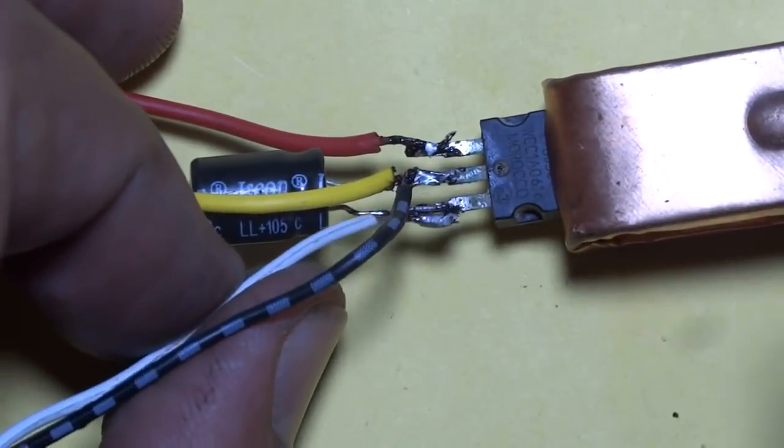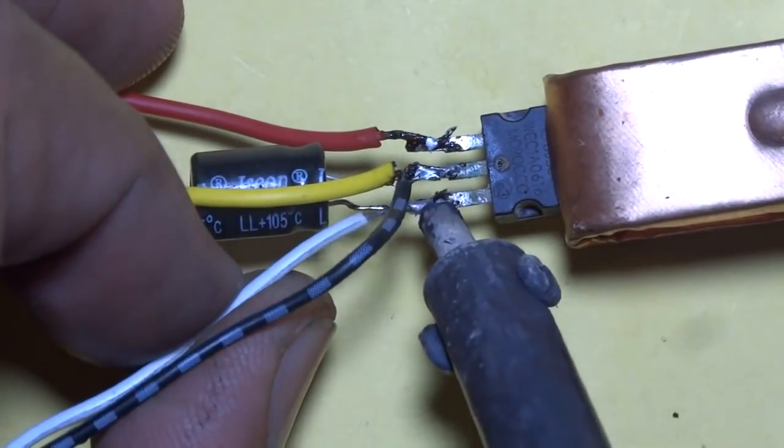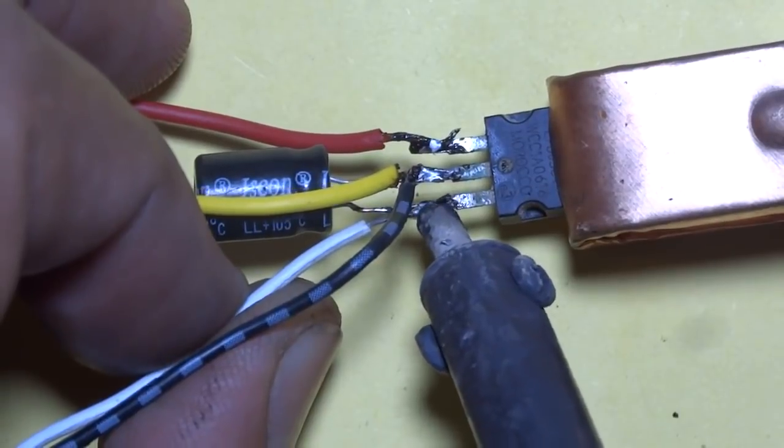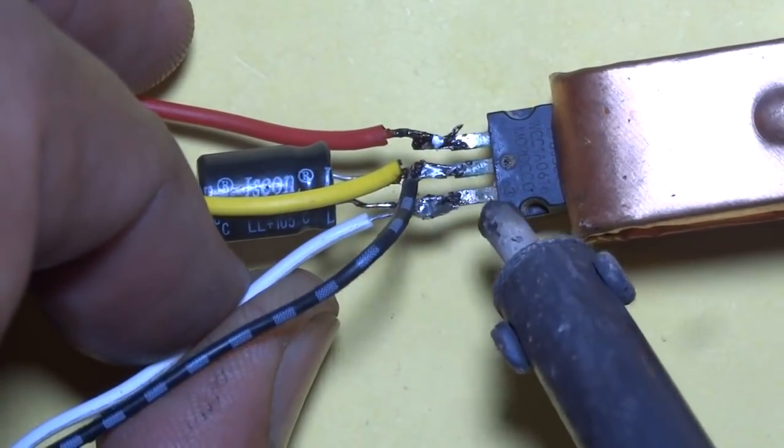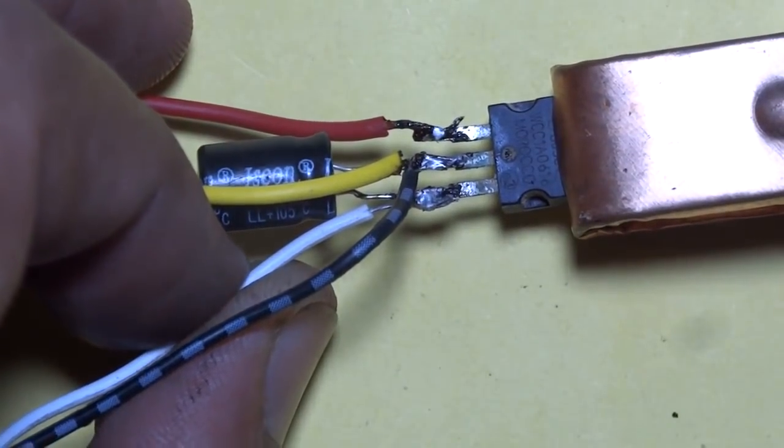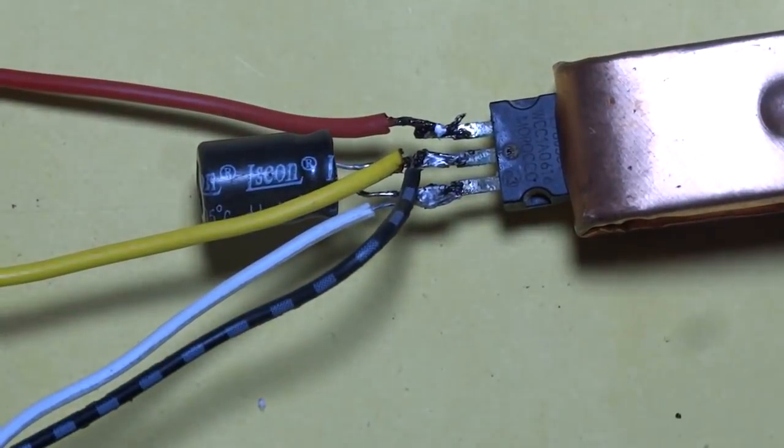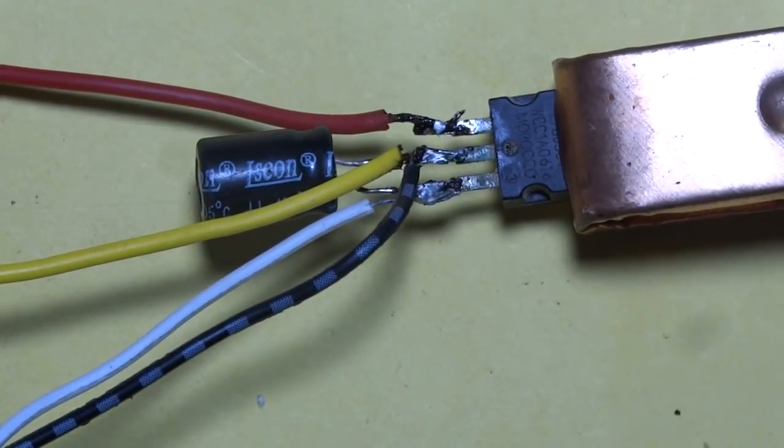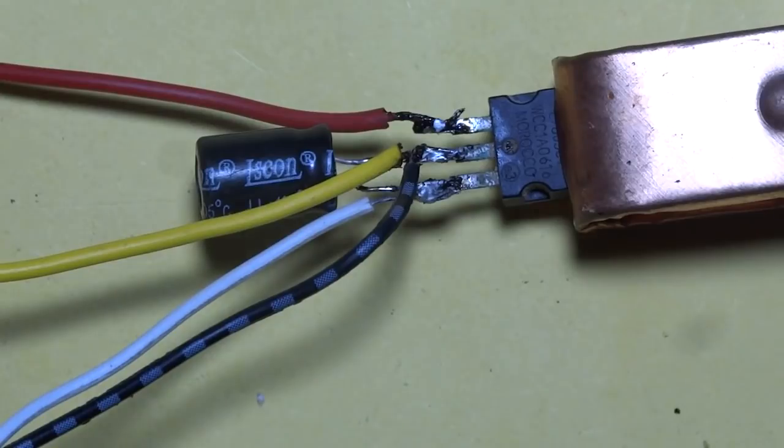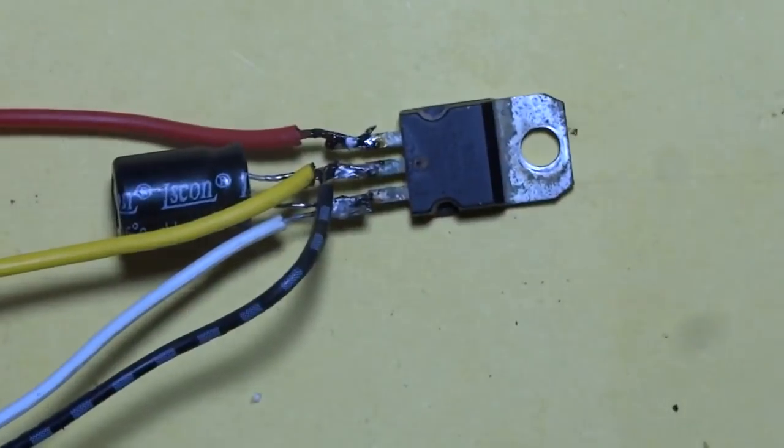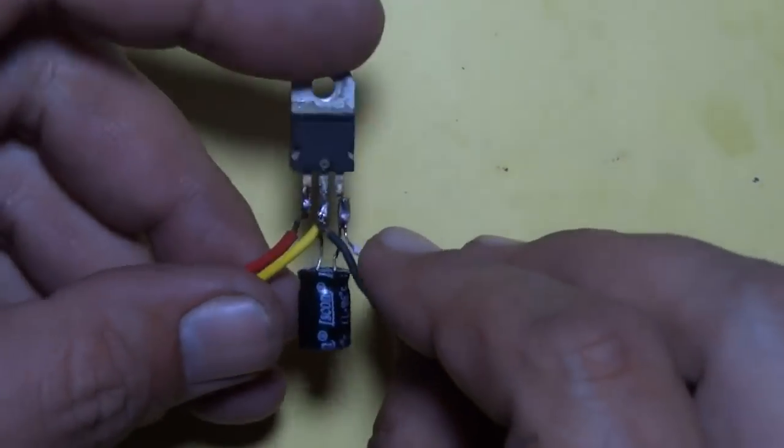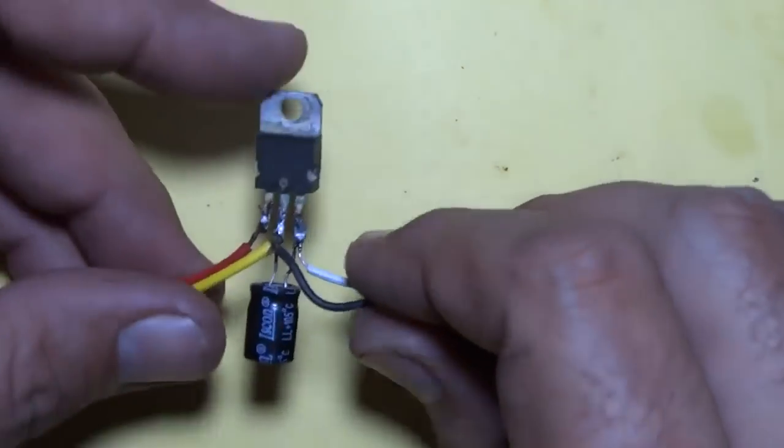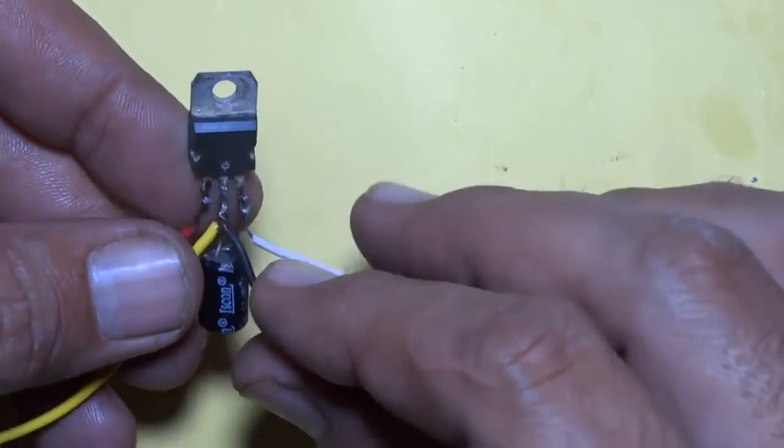It is positive output point. Now our circuit is ready. You can input 5 to 24 volt and output will be 5 volt always.